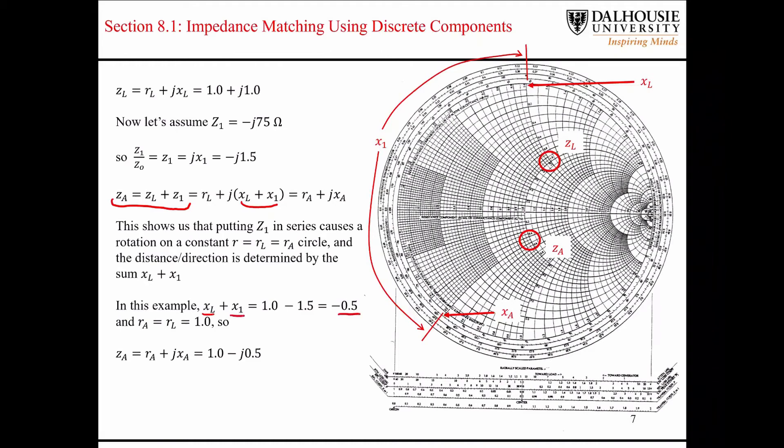you can see that the result is negative 0.5. So that means that our impedance at point A is going to be 1 minus J 0.5.